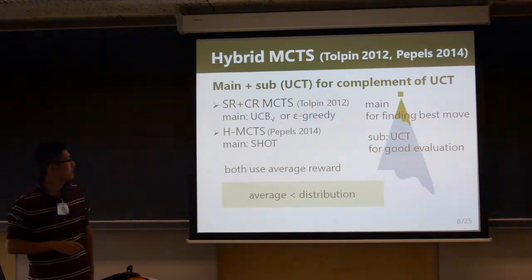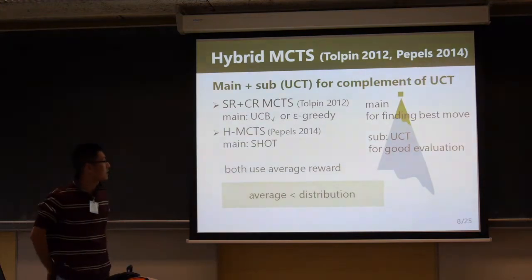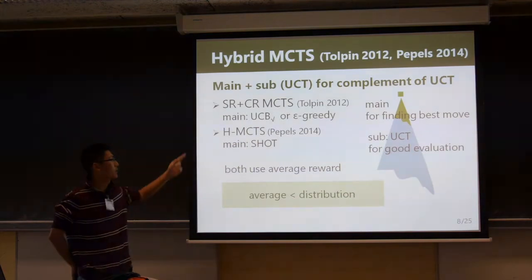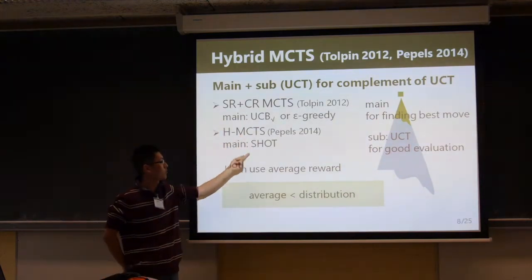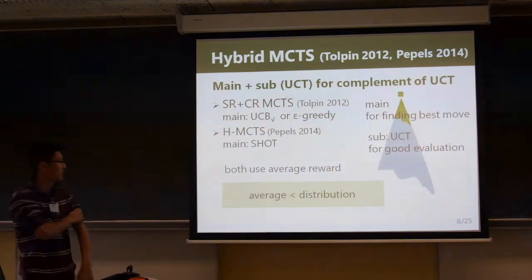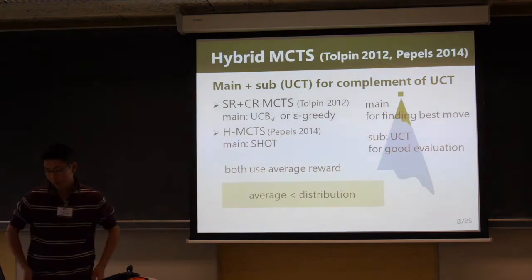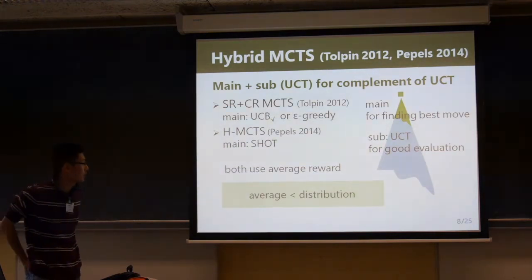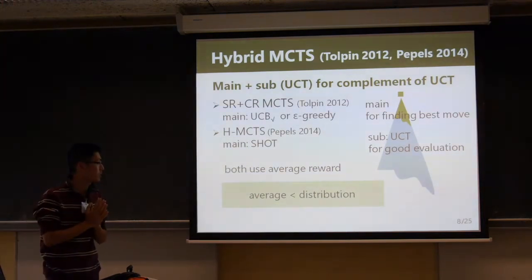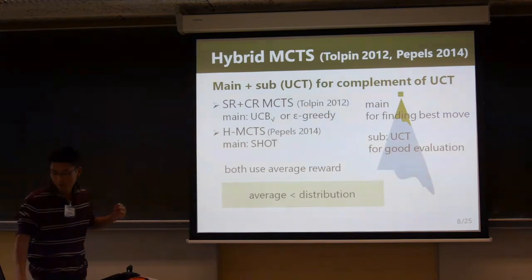Recently, hybrid MCTS called SR, shared MCTS and HMCTS has been proposed and it is better than UCT in some domains. SR, shared MCTS and HMCTS use neural methods as the main strategy and UCT as sub-strategy. Most algorithms use the average reward, but distribution seems to be better because it contains more information. Therefore, we combine an algorithm which uses distribution.